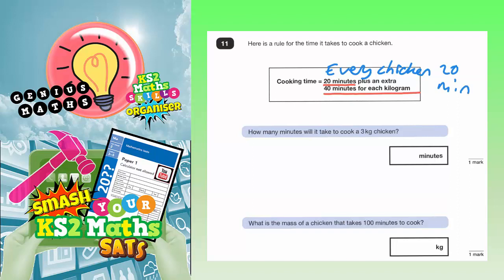And then after that it is according to the weight of the chicken. So how many minutes will it take to cook a 3 kilogram chicken? Well, each kilogram is 40 minutes. So 1 kilogram would be 40 minutes.